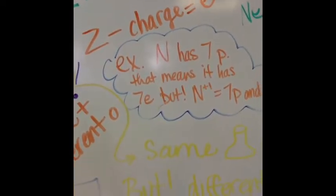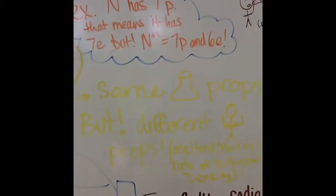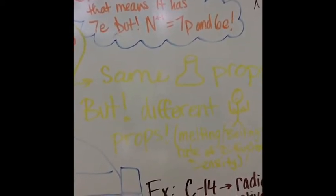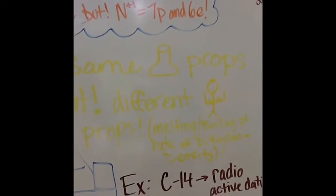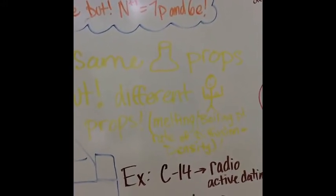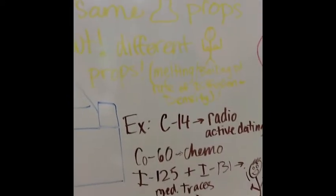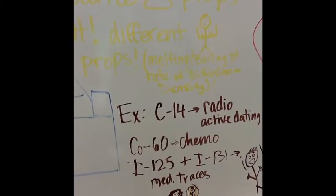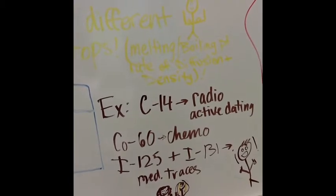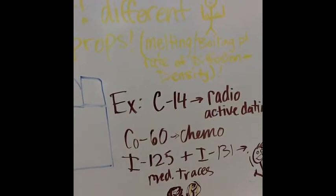Remember those isotopes? As well as having the same number of protons, they have the same chemical properties. But having a different number of neutrons means they also have different physical properties, such as density (mass over volume), rate of diffusion, and melting/boiling point. For example: carbon-14 versus carbon-12 is used for radioactive dating, cobalt-60 is used for chemotherapy, and iodine-125 and iodine-131 are both used for medical tracers.